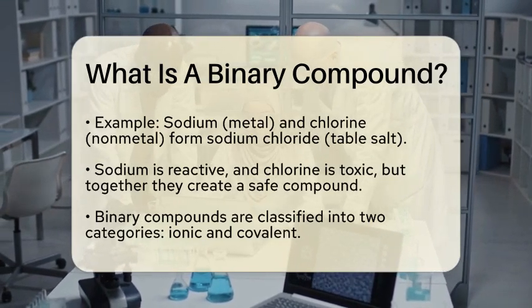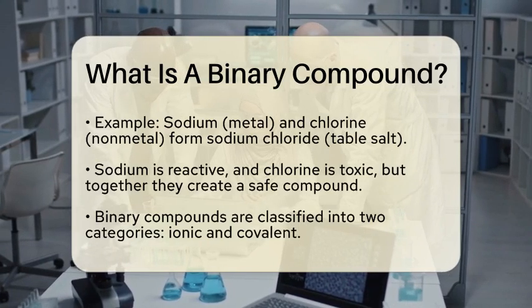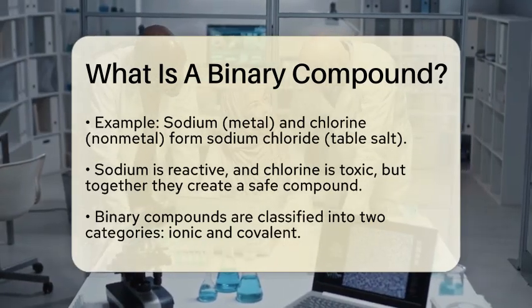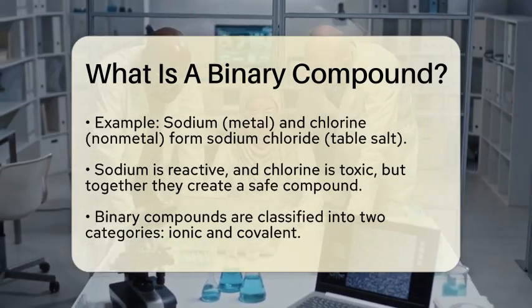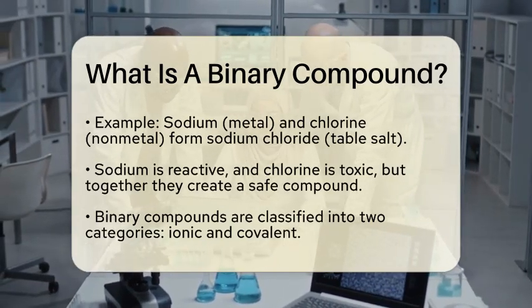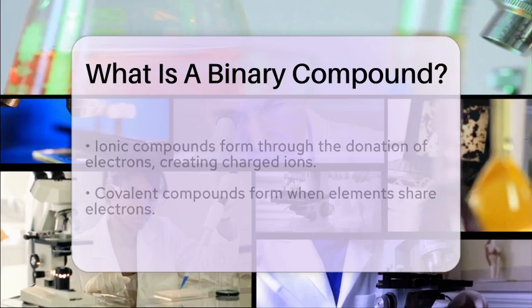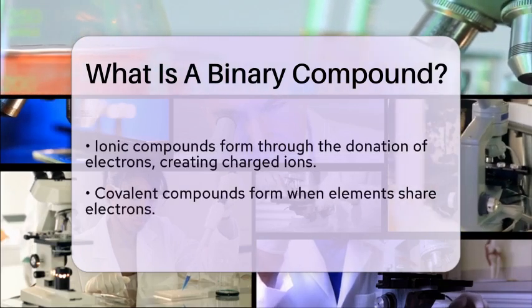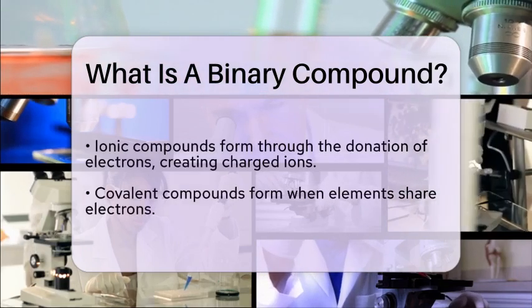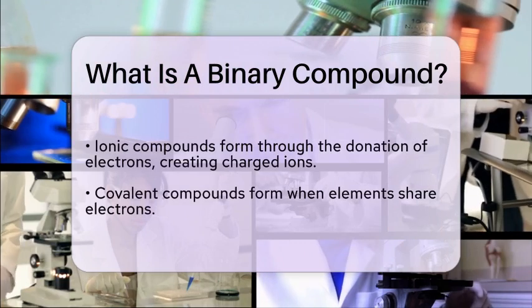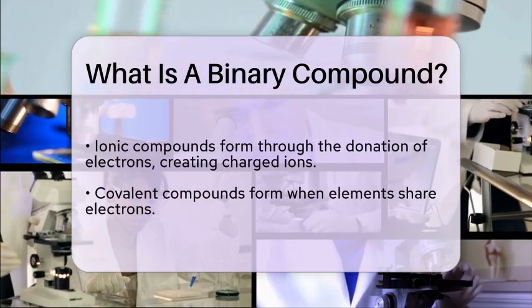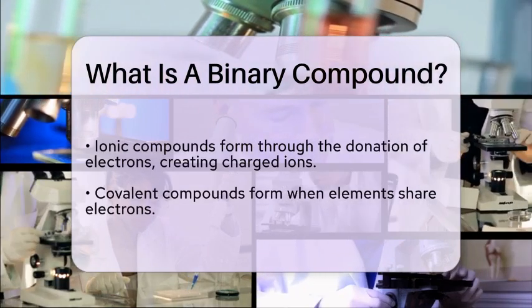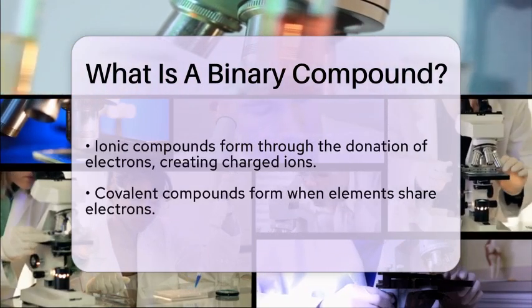Sodium is a highly reactive metal, and chlorine is a toxic gas, but together they form a safe and essential compound for human consumption. Binary compounds can be classified into two main categories: ionic and covalent.